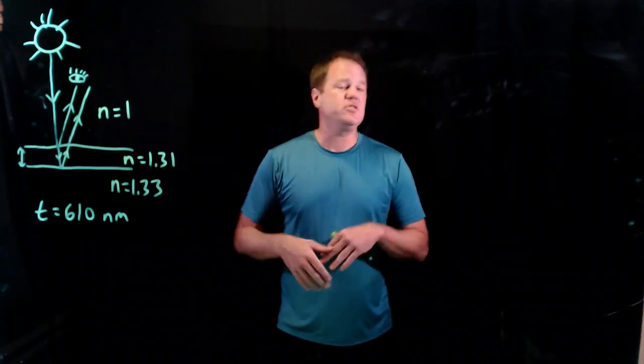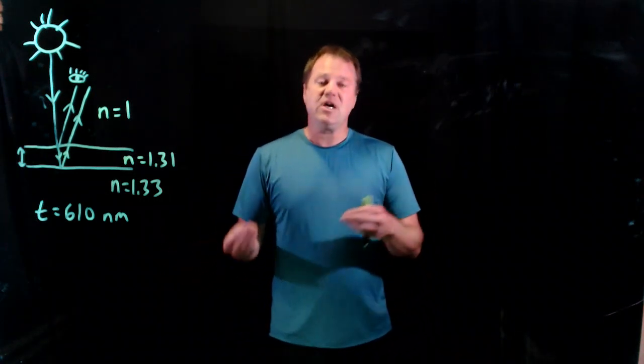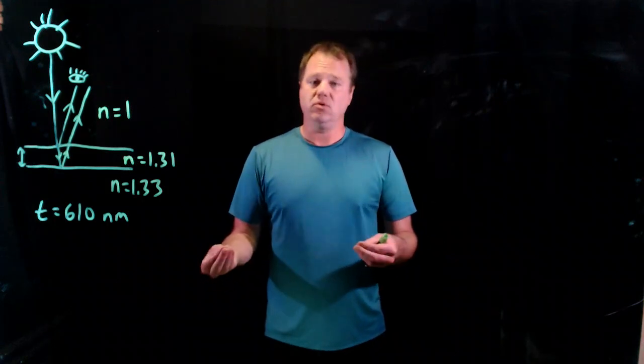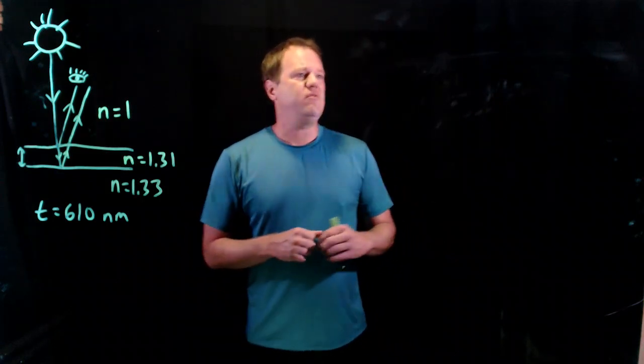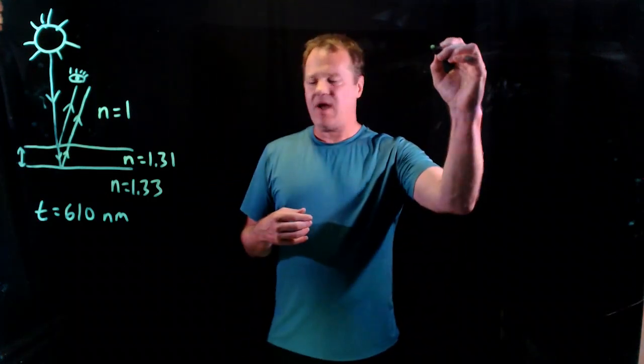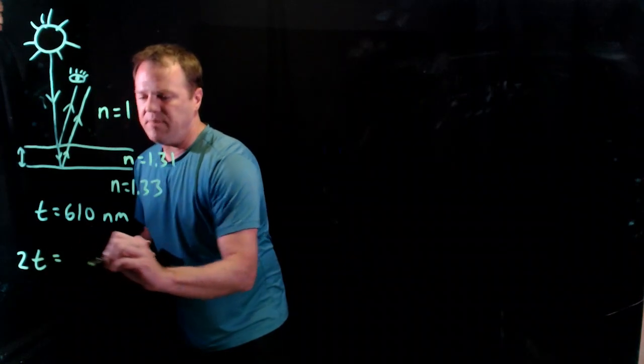But with two inversions, things are basically normal. We would associate m times the wavelength with constructive interference, and that's what we're looking for. Okay, so for thin films, the left-hand side, the path difference is always 2t. So we have 2t becomes the path difference.